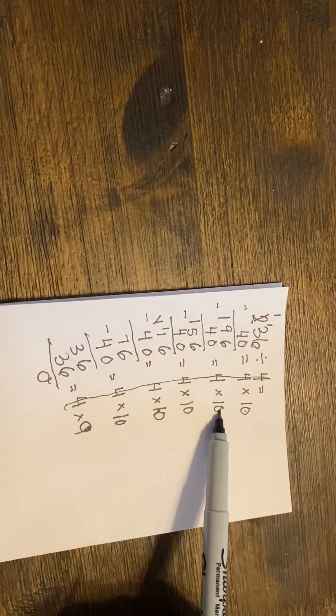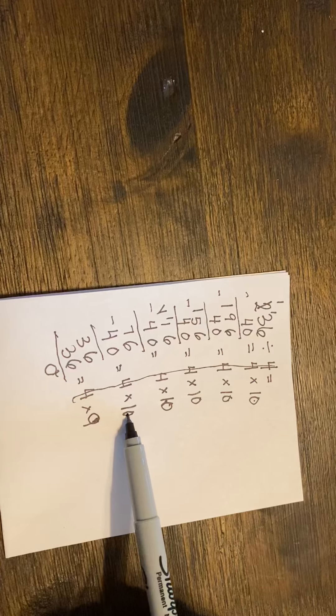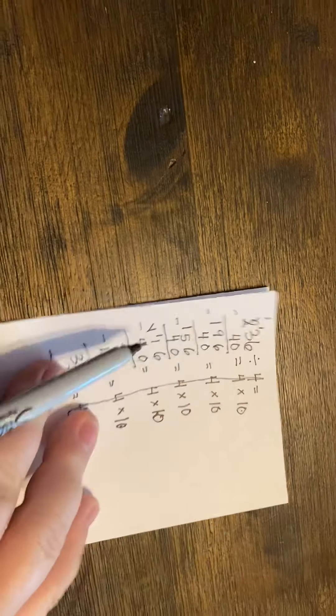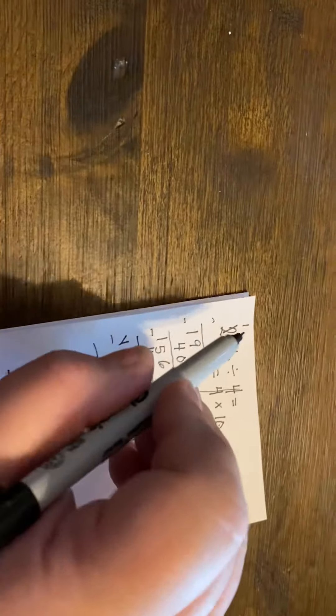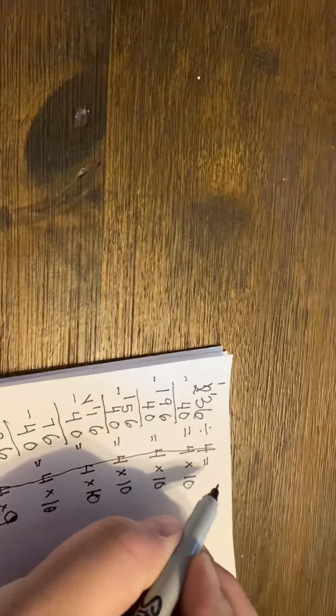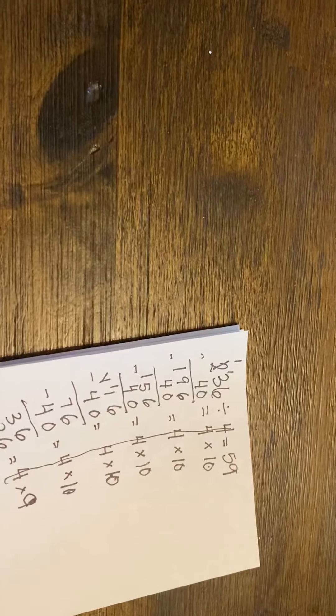Okay, so 10, 20, 30, 40, 50, 59. So our problem, 236 divided by 4, equals 59, because there's nothing left over.